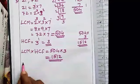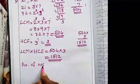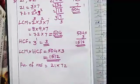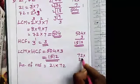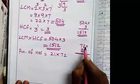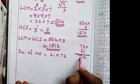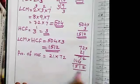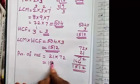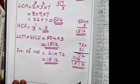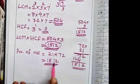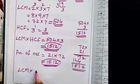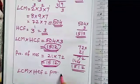Now find the product of the numbers 21 and 72. 72 into 21 equals 1512. So the product of LCM and HCF is 1512, and the product of the numbers is also 1512. Therefore, LCM into HCF equals the product of the numbers. This is verified.